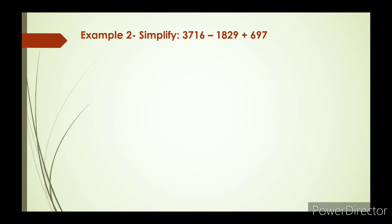Now see the second example. Simplify 3716 minus 1829 plus 697. Here also, before 3716 no sign is given, so we will take 3716 as a positive sign.